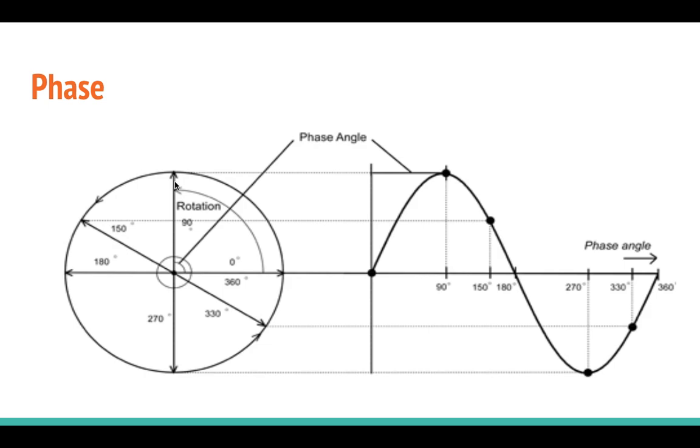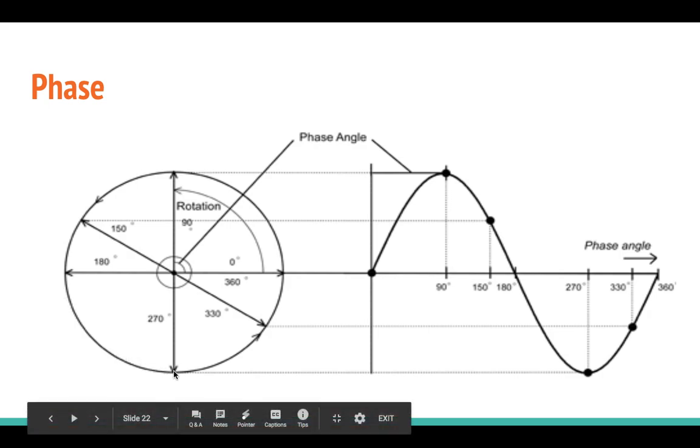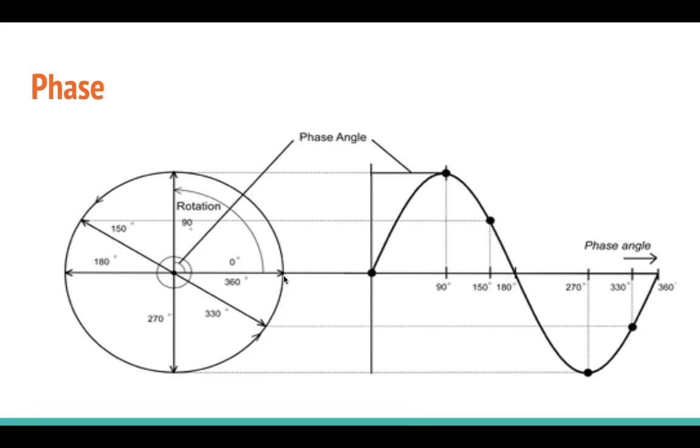We would find that we reach zero again at 180 degrees. We reach our maximum negative value at 270 degrees, and we've returned to zero at 360 degrees, where we begin the cycle.